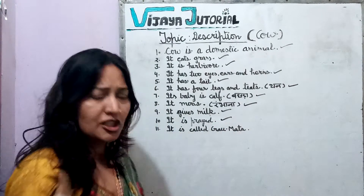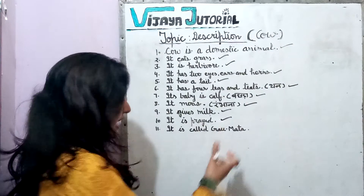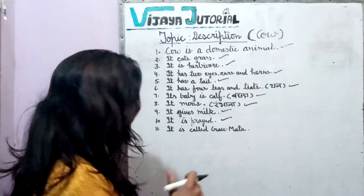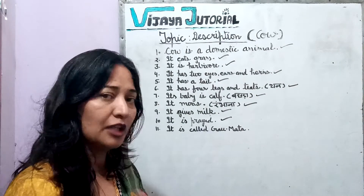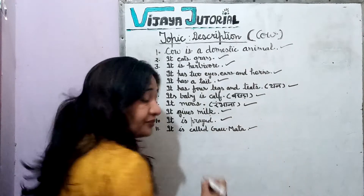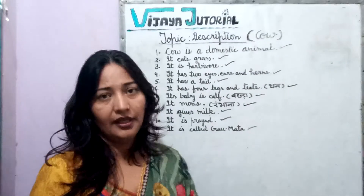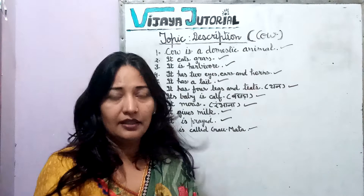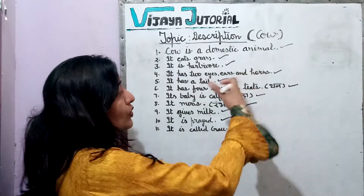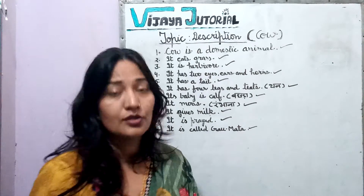The word 'prayed' is a tricky word — children often misspell it, so take care with its spelling. The cow is also called 'Gaumata' in India. So these are eleven sentences in total, but if you split them individually you can make fifteen to sixteen sentences.